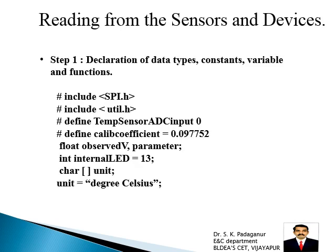Let's start with Step 1. Here we are working with ADC conversion. Step 1 covers the declaration of data types, constants, variables, and functions. First, include the SPI dot header file — that is the Serial Peripheral Interface — which must be included. This handles serial IO functions between the Arduino SPI port and the serial input from the ADC. Second, include util dot H, which is a utility functions file that includes UART.